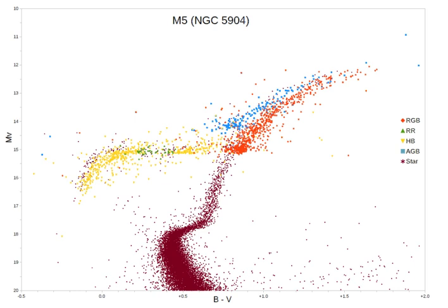The red giant branch, sometimes called the first giant branch, is the portion of the giant branch before helium ignition occurs in the course of stellar evolution. It is a stage that follows the main sequence for low-to-intermediate mass stars. Red giant branch stars have an inert helium core surrounded by a shell of hydrogen fusing via the CNO cycle. They are K- and M-class stars, much larger and more luminous than main-sequence stars of the same temperature.